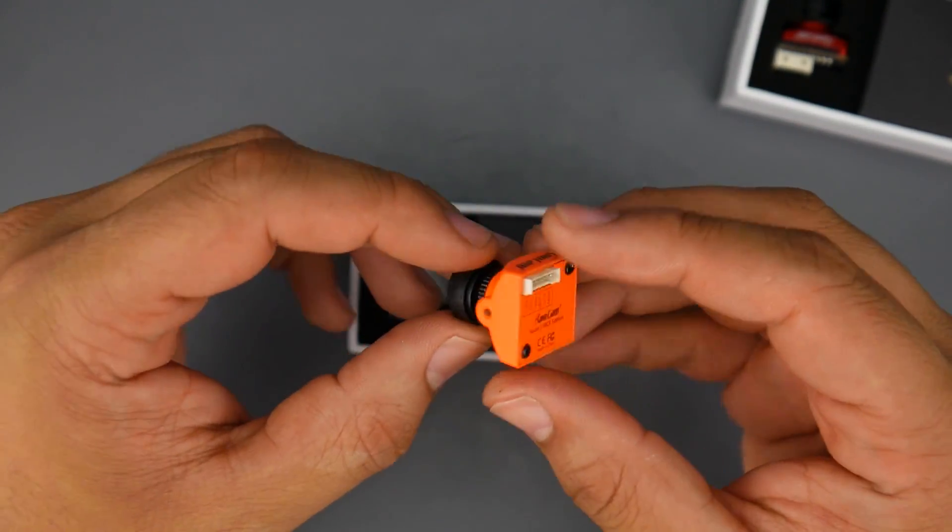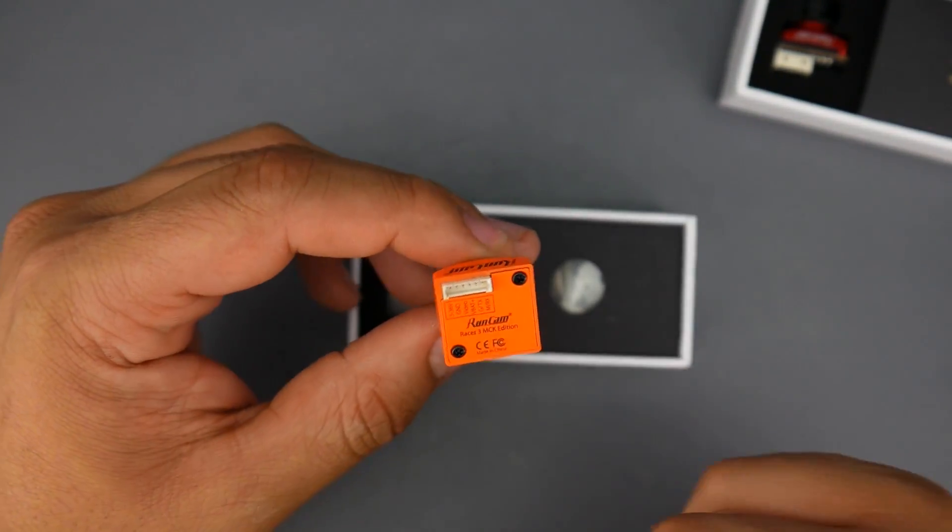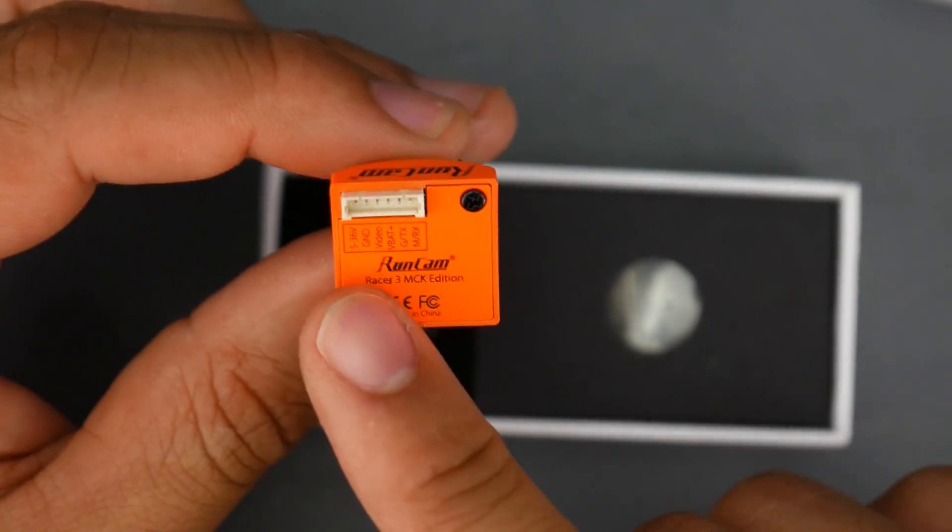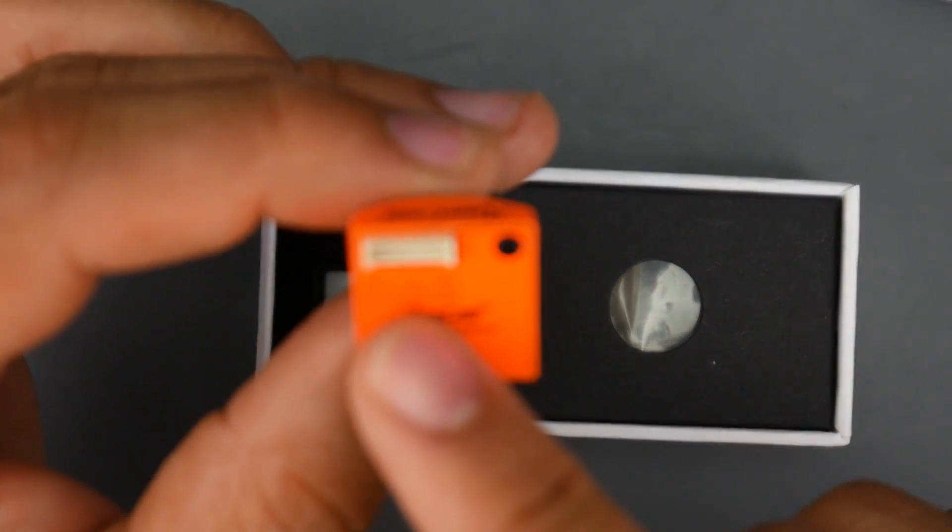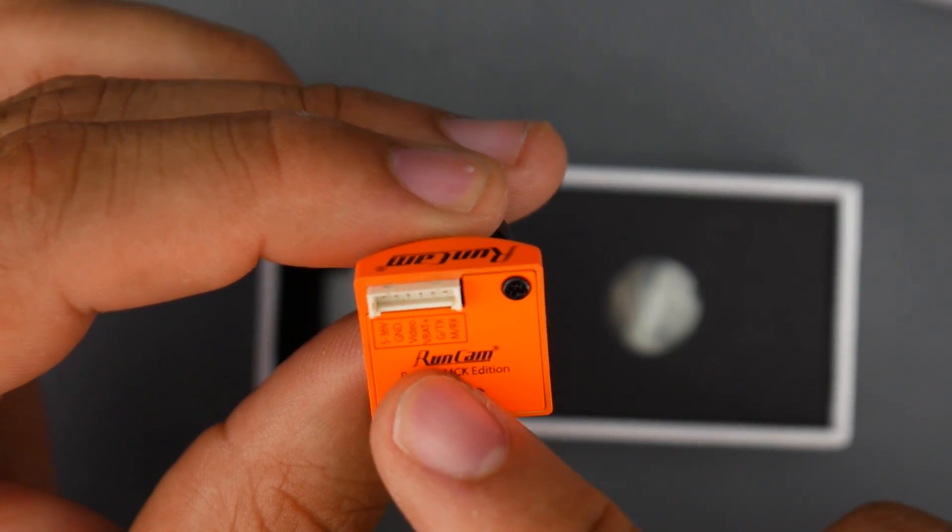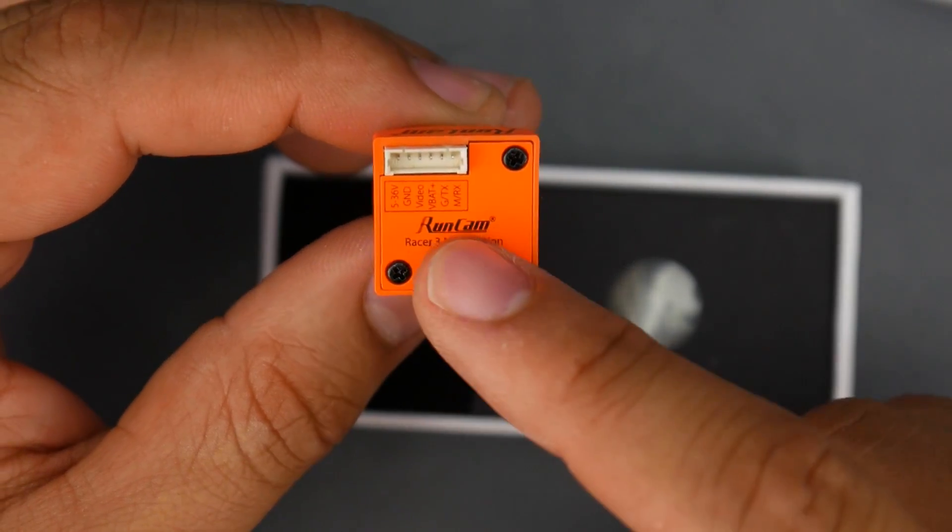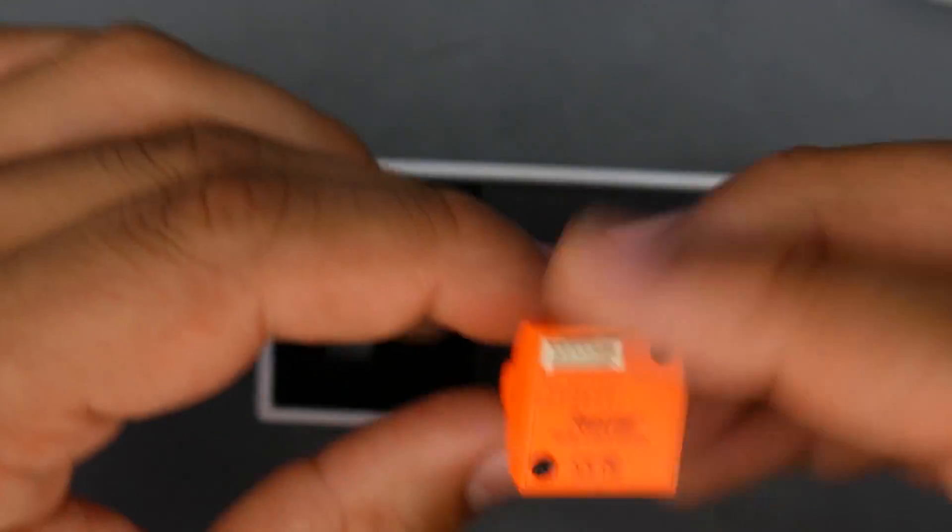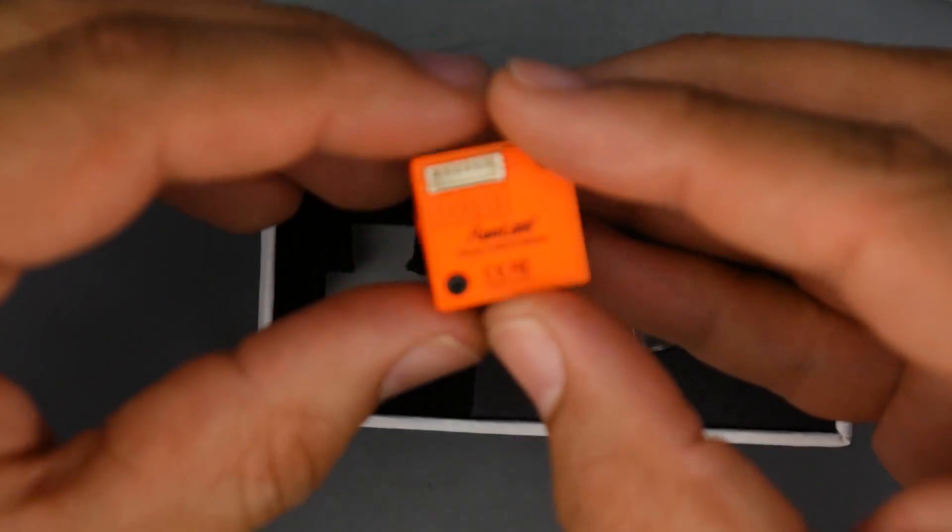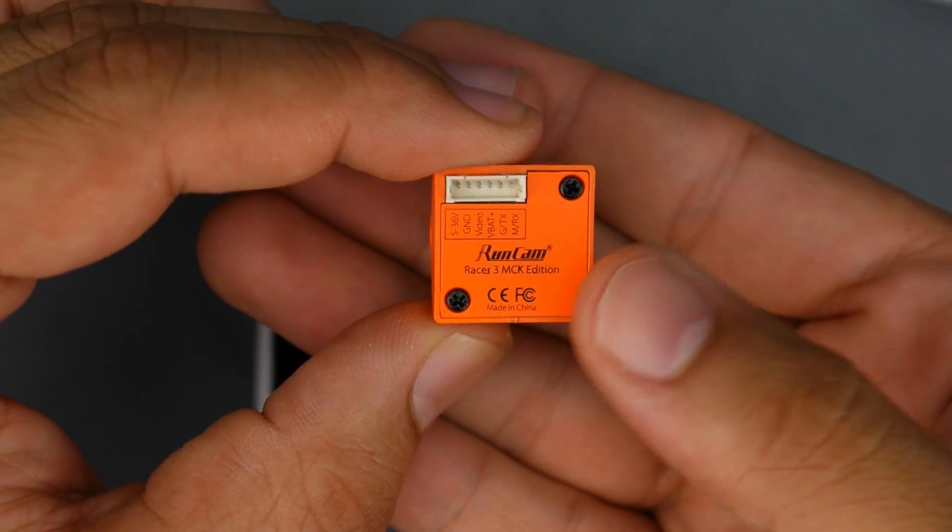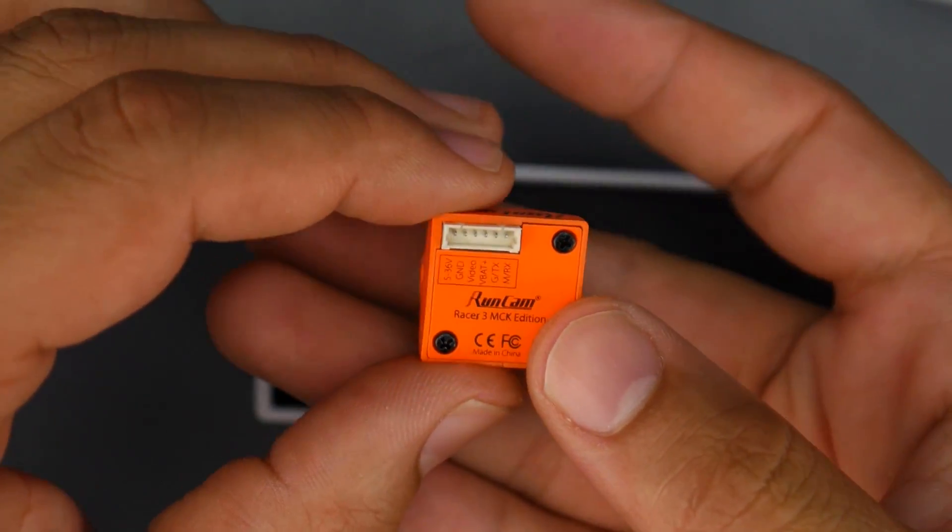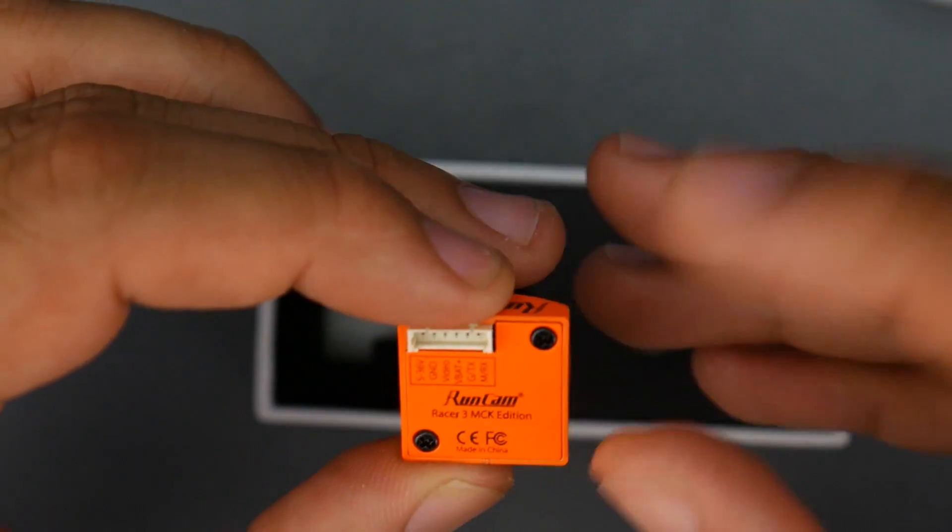Starting with the RunCam Racer 3, there are quite a lot of connectors in the back. We have 5 to 36 volt input, ground, and video. The VBAT+ can be used to detect your battery's voltage. You would run a wire straight from your positive leads where your ESC or battery is connected, and you'd be able to output that voltage.